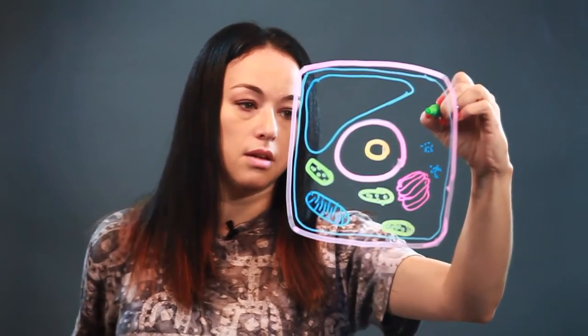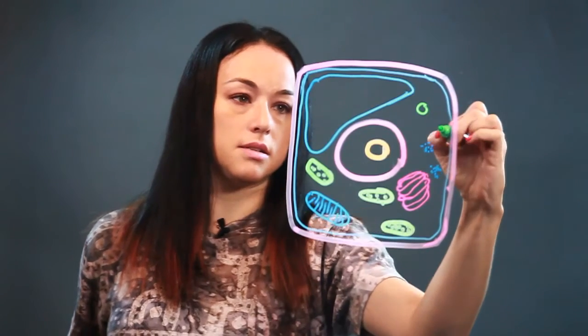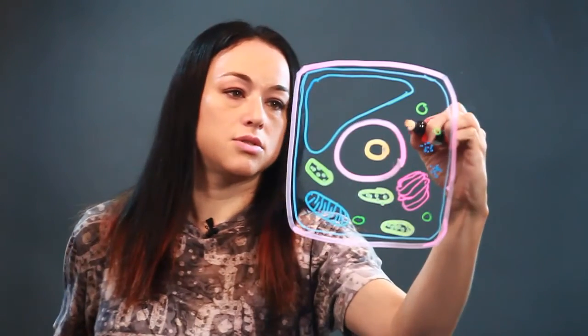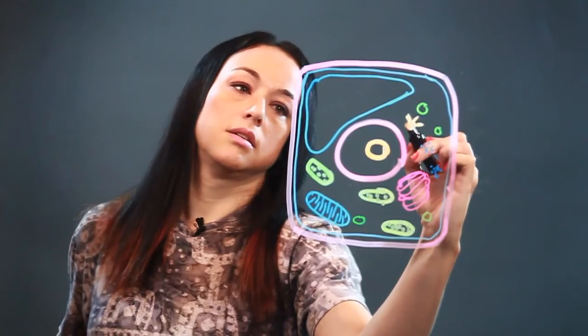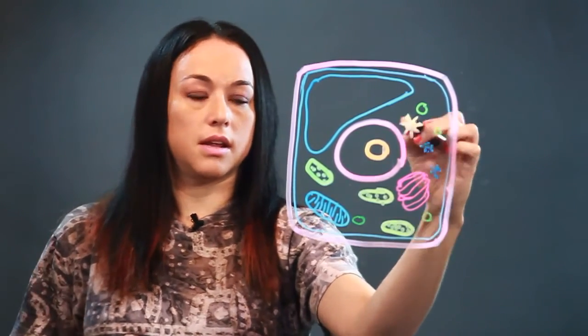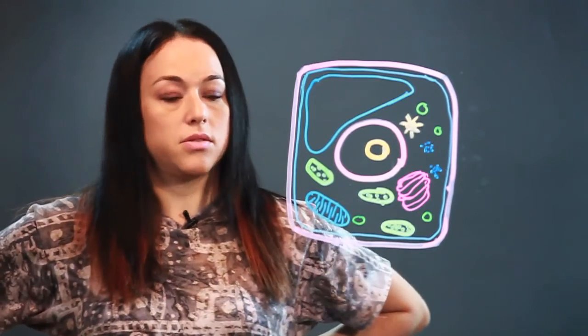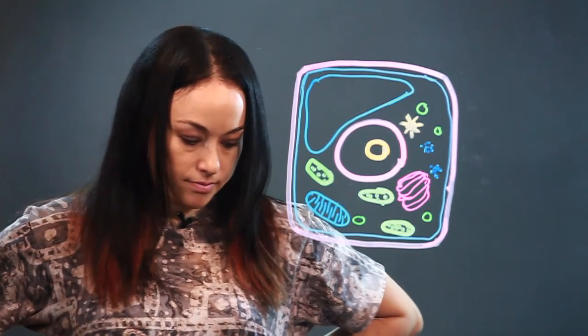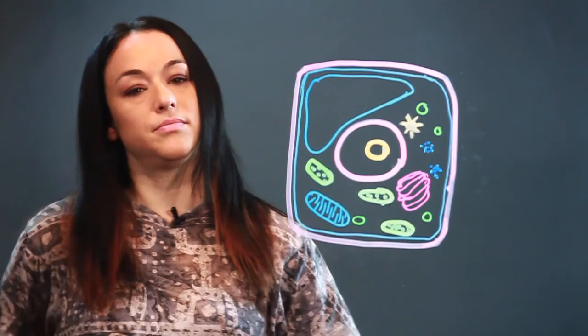These are the amyloplasts — little round circles. And then there's this thing called the centrosome, and this aids in the duplication of the cells. It has these radiating lines, and that's how it divides and makes more cells. So, that is just a real basic identifying of the parts of a plant cell.